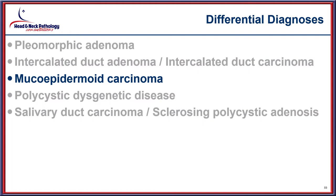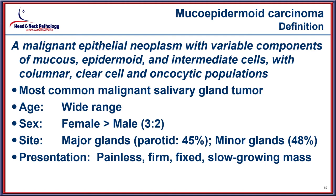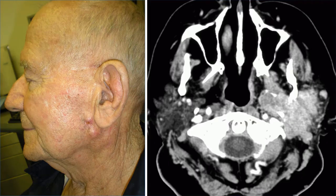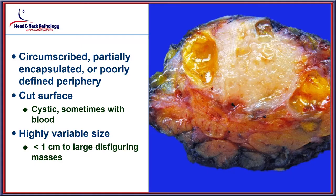Mucoepidermoid carcinoma is one of the most common malignancies of salivary glands, occurring over a wide age range with females slightly more affected. Major and minor salivary glands are almost equally involved. The tumor presents as a preauricular lesion that may extend deeply, and is usually poorly circumscribed to partially encapsulated with a cystic cut surface ranging from small to very large disfiguring masses.